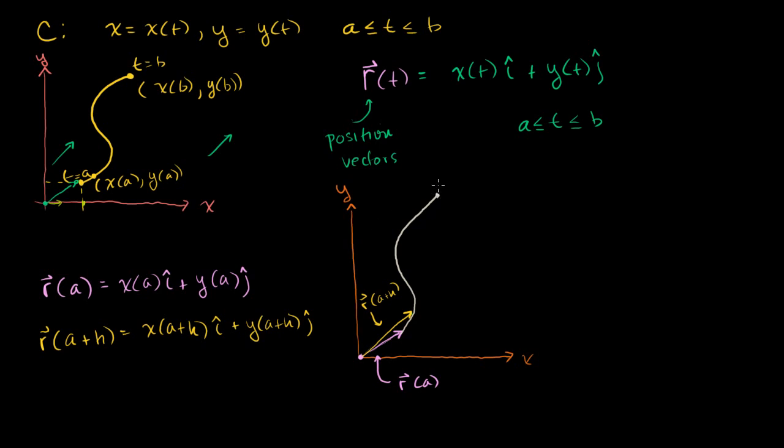And for example, R of b is going to be a vector that looks like this. It's going to be a vector that looks like that. I want to draw it relatively straight. That vector right there is R of b.